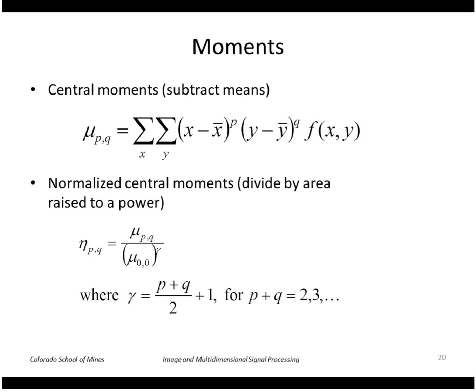We can compute more invariant moments by, first of all, subtracting off the mean. So these are called central moments. We subtract off the mean x and the mean y and raise those to the powers p and q. And we can also normalize by scale by dividing by the area. So I can scale the central moment by the area as shown here.